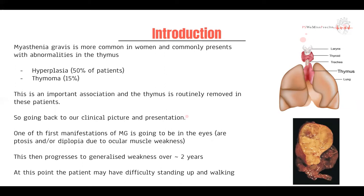If you have one side of the eye whose ocular muscles are fatiguing before the other, one eye is going to lag behind or not be completely coordinated in its movements. That's going to present with ptosis or drooping, or diplopia, because now the eyes aren't angled correctly so you might have double vision. Although this starts at the eyes, it then progresses on to generalized weakness over around two years, at which point many patients might have difficulty standing up and walking.